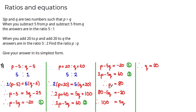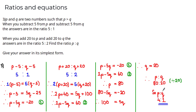We now have p = 80 and q = 20. Checking: p > q ✓. The ratio p:q = 80:20. Since both are divisible by 20, the simplified ratio is 4:1.